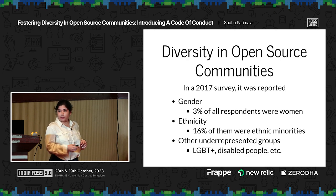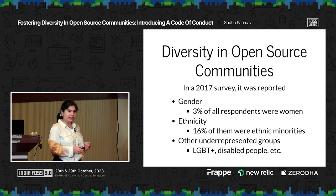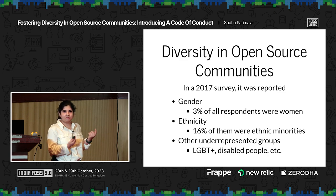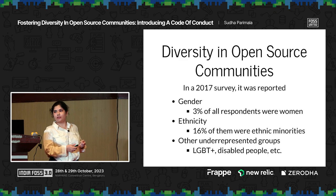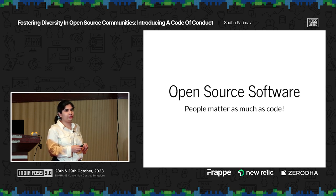This is from a 2017 survey conducted by GitHub. It reported that 3% of all respondents identified as women and 16% identified as ethnic minorities, which is really not great. I didn't really dig more into this data because it was already depressing, but I'm sure the numbers are probably similar. The point is we shouldn't stop here — we should keep thinking about how to improve these numbers. In open source software, people matter as much as code. That's really the beauty of open source software.